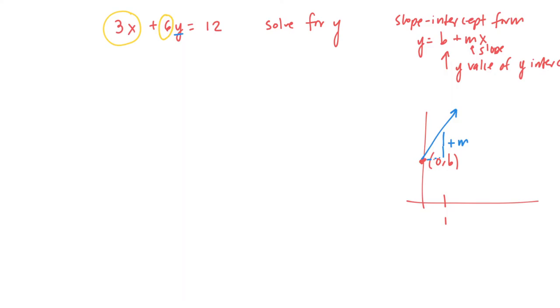And so what we're going to do is, if we're adding 3x, we're going to subtract 3x from both sides. When we do that, this becomes 0, and then 6y, 6 times y is equal to 12 minus 3x.